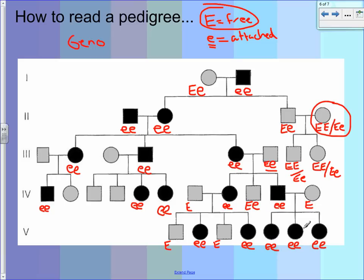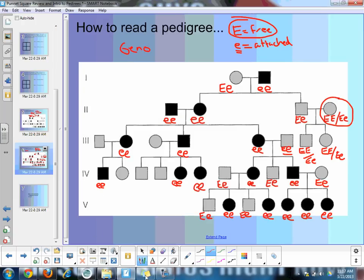So then, looking at their offspring, this one obviously got the big E from dad, so he had to get a little e from mom. Over here, same thing — this person has a big E, but all their kids have the recessive phenotype, so they must have a little e too. These are big E, little e, big E, little e. I'm going to pause the video here and I want you to see if you can fill out everything on the right side. Go ahead and pause, fill it out, then press play to see my answers.